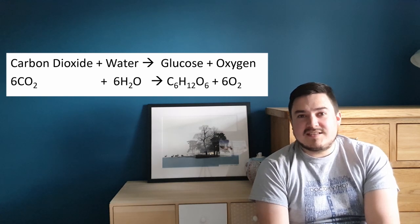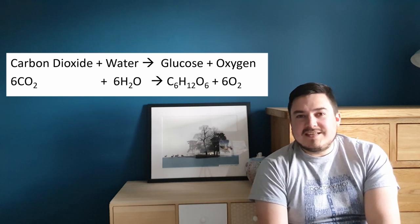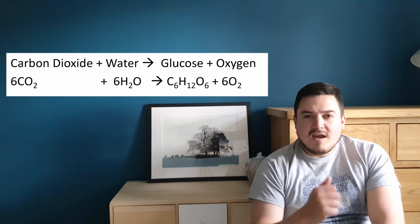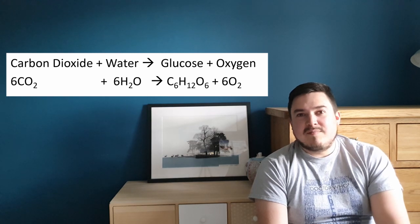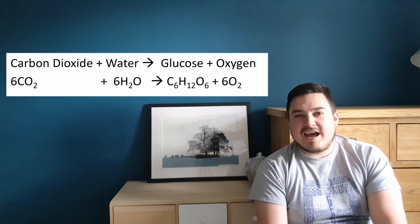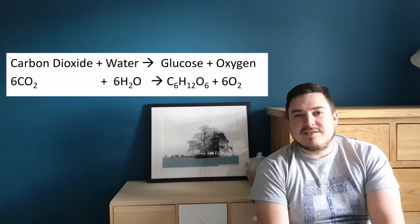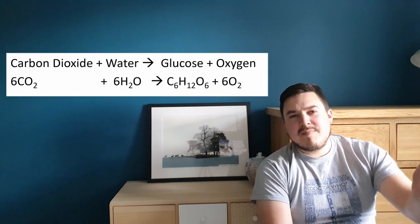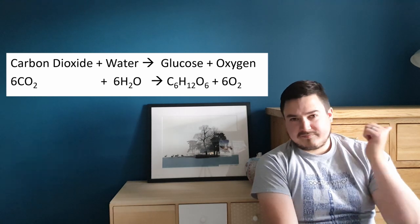I've also given you the symbol equation for this: carbon dioxide is obviously CO2, water is H2O, glucose is C6H12O6, and oxygen is O2. We can balance this symbol equation, but the simplest way to remember this when it comes to photosynthesis is that carbon dioxide, water, and oxygen don't have sixes in their formulas, so we put a six at the front, but glucose does have sixes in it so we don't put sixes there.